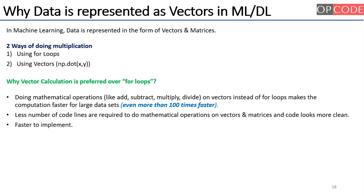Faster to implement. As we have seen before also, we just need to use an np.dot and pass the two arguments, the two vectors, and we will get the result. Whereas in case of for loops, first we need to create a loop, decide for how long we need to run the loop, and then do the multiplication part one by one.